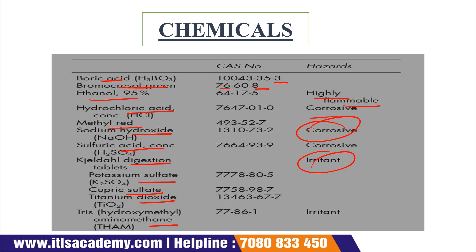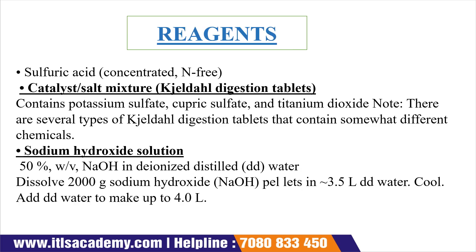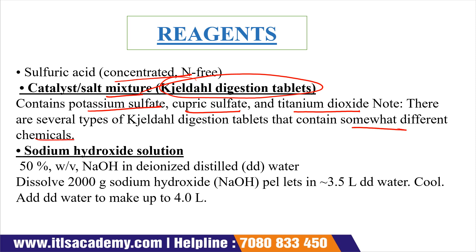The reagents used are: first, concentrated sulfuric acid; second, the catalyst salt mixture, also called the Kjeldahl digestion tablet, which contains potassium sulfate, cupric sulfate, and titanium dioxide. Note that different types of Kjeldahl digestion tablets may contain different chemicals, but the basic components are potassium sulfate, cupric sulfate, and titanium dioxide.